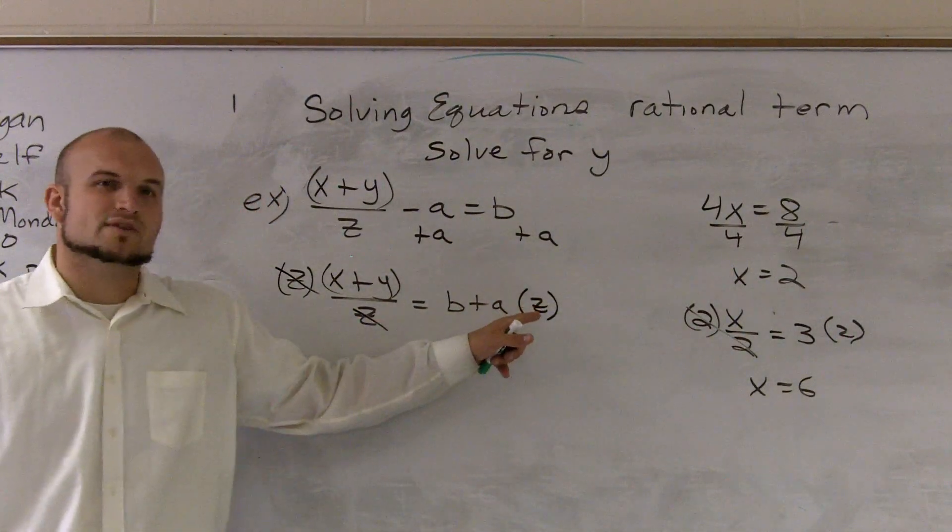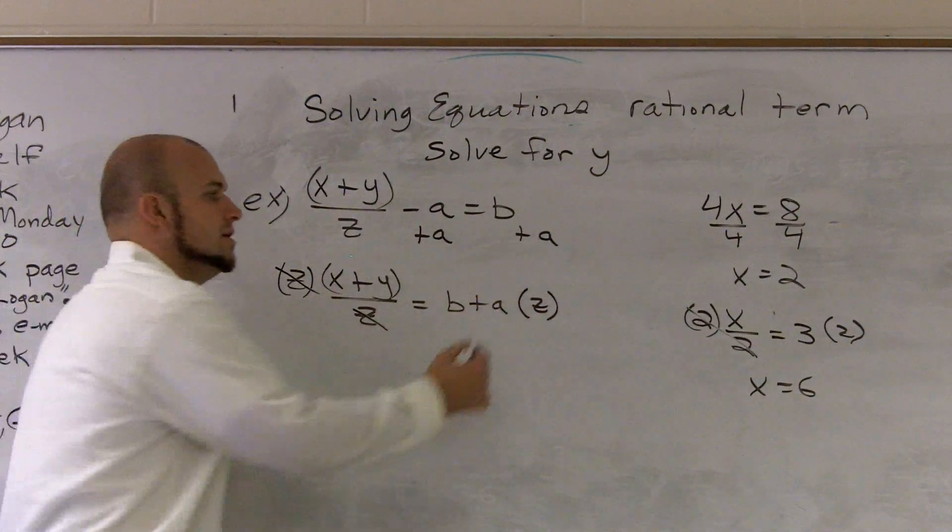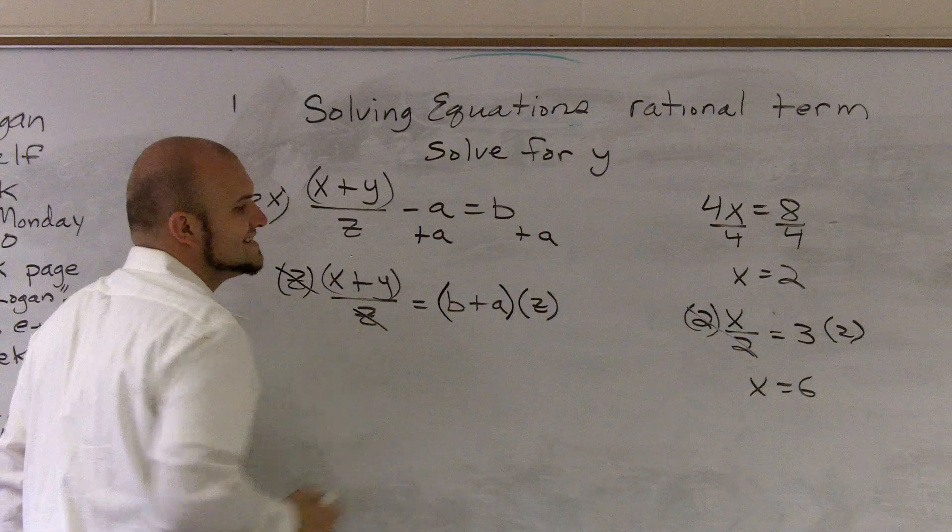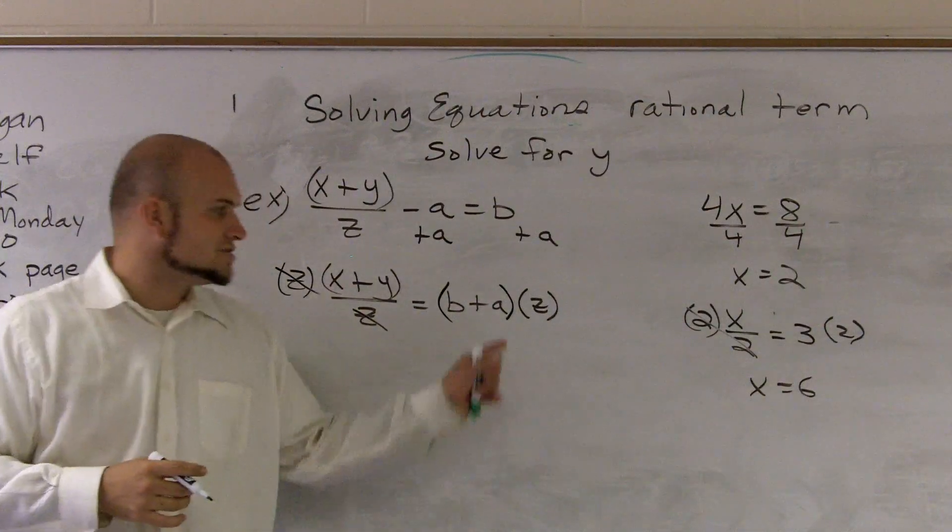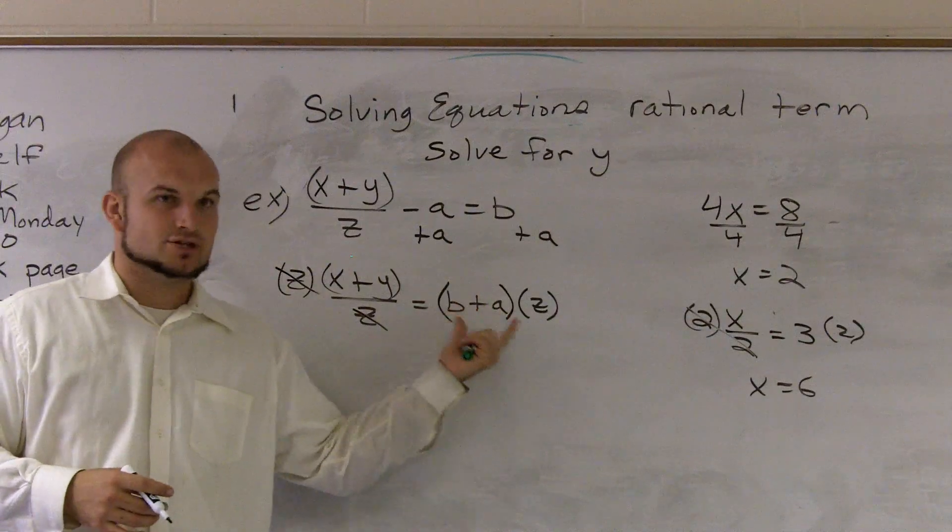I don't just want to say z over here, though, because if you look at that like that, you say, oh, it's just z times a. No. Put parentheses around your b plus a, so therefore you notice that z has to be multiplied by b and by a. Those are two separate terms.